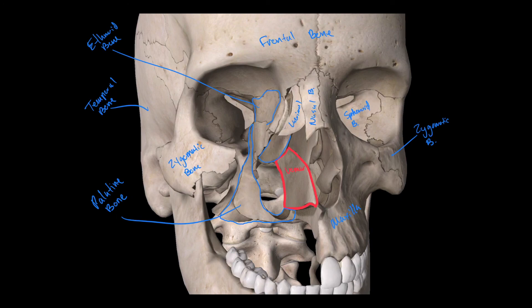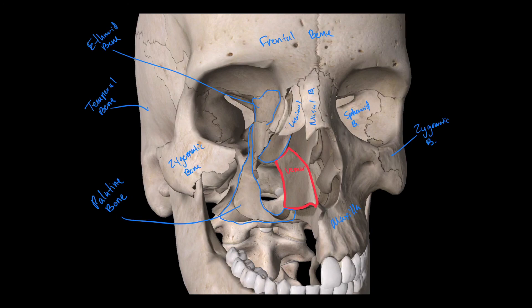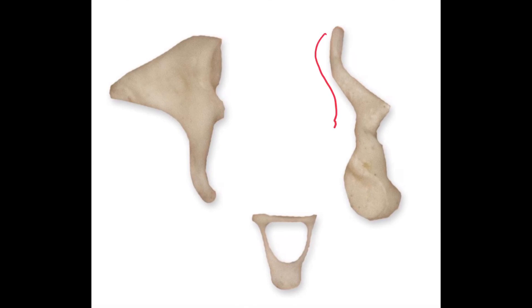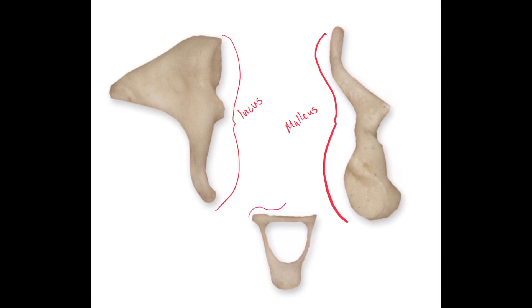We have three more pairs of bones to cover. These bones are called auditory ossicles — they allow us to hear and are found in the middle ear. They have pretty unique names. The first bone is called the malleus. The second is called the incus. The third is the stapes. Each one of these is found on each side of the head in each middle ear, and these are called auditory ossicles.